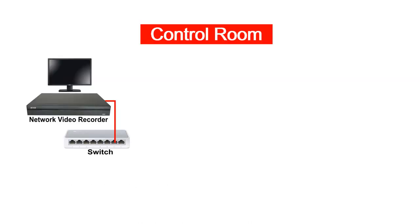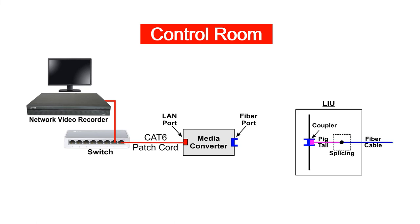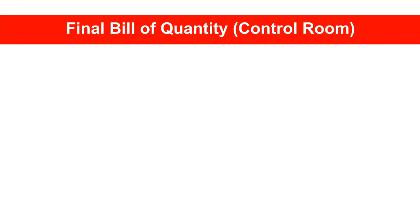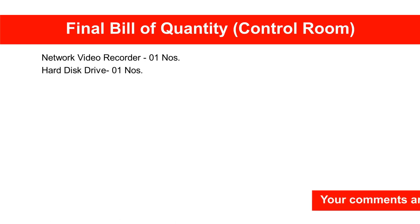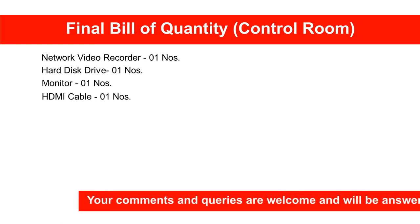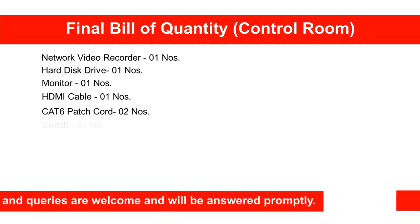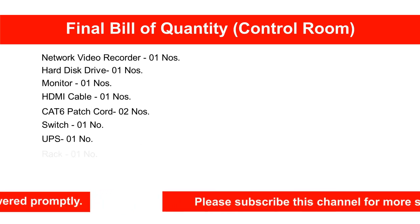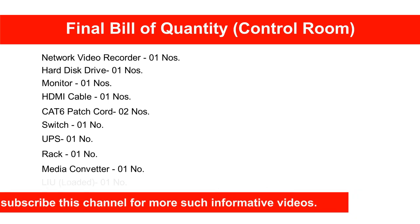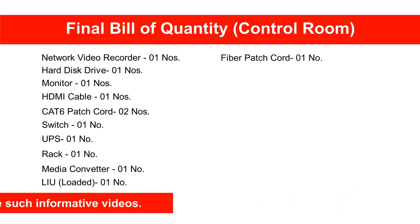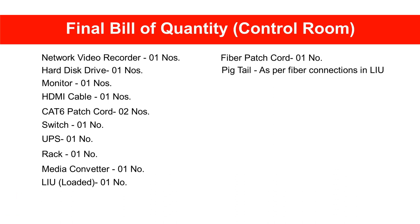Next, let's move on to check the connections at the control room. The PoE switch uplink port is connected to the LAN port of the media converter with CAT6 patch cord. The fiber port of the converter is connected to the LIU with the help of a fiber patch cord. The final bill of quantity for the control room is: network video recorder 1 number, HDD 1 number, monitor 1 number, HDMI cable 1 number, CAT6 patch cord 2 numbers, switch 1 number, UPS 1 number, rack 1 number, media converter 1 number, LIU fully loaded 1 number, fiber patch cord 1 number, and pigtails as per the fiber connections in the LIU.